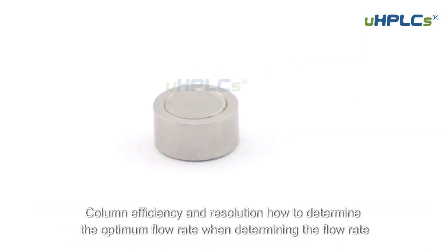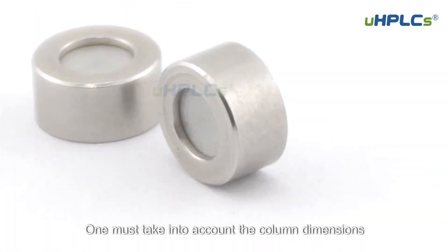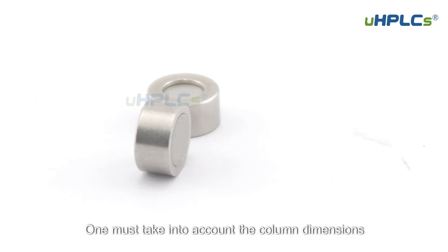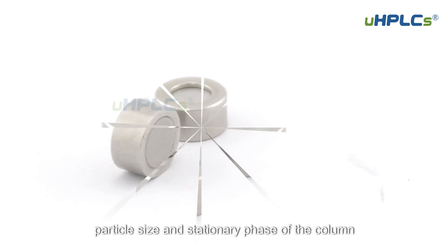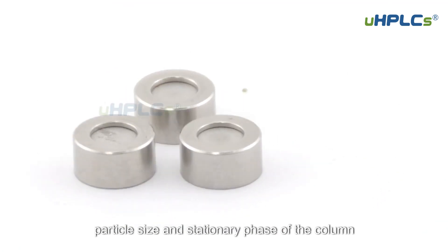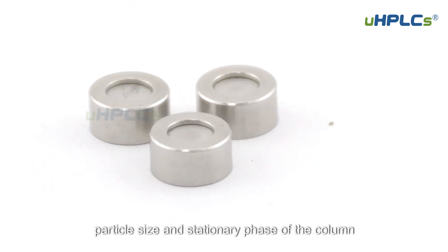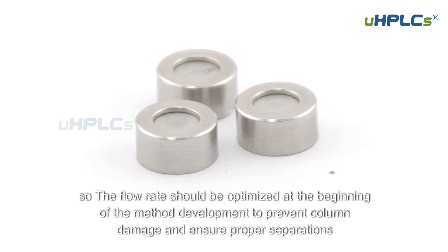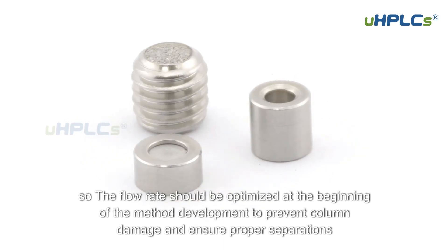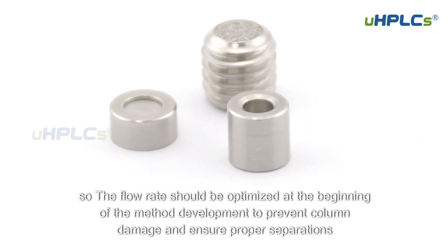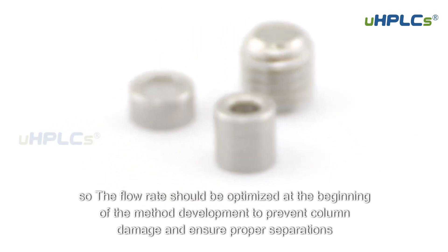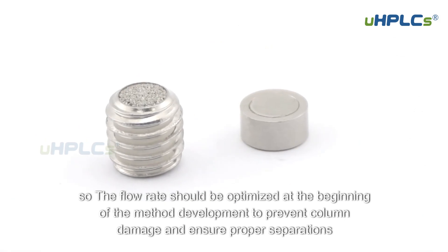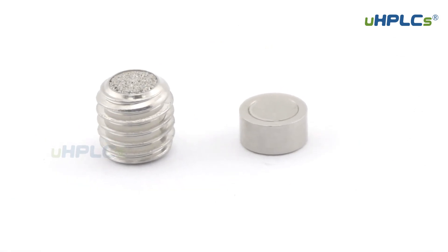When determining the flow rate, one must take into account the column dimensions, particle size, and stationary phase of the column. The flow rate should be optimized at the beginning of the method development to prevent column damage and ensure proper separations.